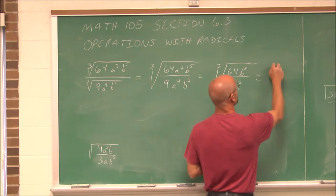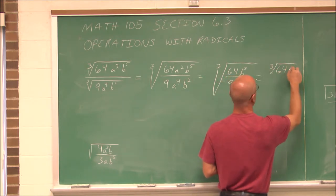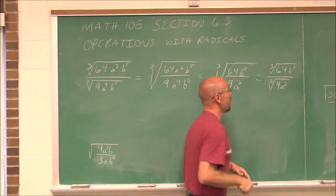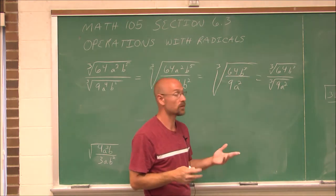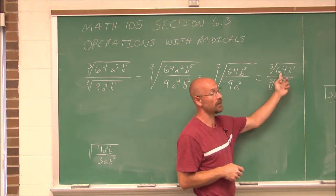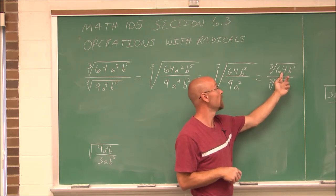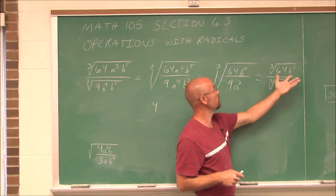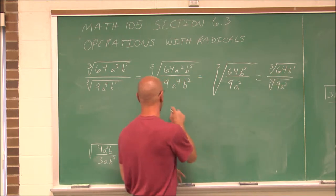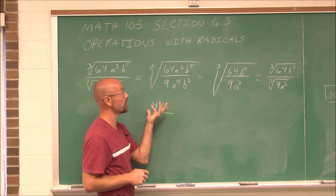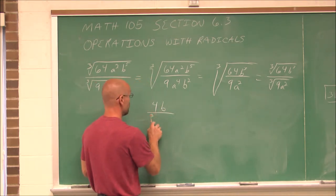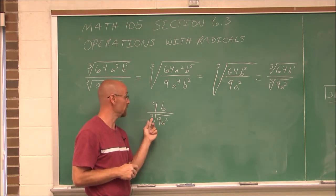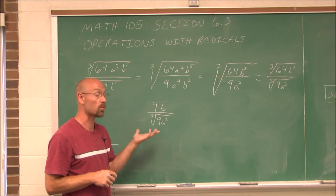Now I'm going to rewrite it using the quotient rule — the cubed root of the numerator over the cubed root of the denominator. I want to simplify my numerator and denominator as far as I can. The cubed root of 64: I identify 64 as a perfect cube — this is 4 cubed, so I can rewrite it as 4. And the cubed root of b³ is a perfect cube, so I can pull that out as well. I have 4b in my numerator, over the cubed root of 9a², where 9 is a perfect square but not a perfect cube, and a² is a perfect square but not a perfect cube. So now it's time to rationalize this denominator.